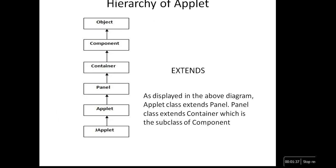Now let's see the hierarchy of an applet. The applet hierarchy contains JApplet, Applet, Panel, Container, and Component. Applet is a class which extends the Panel class. Panel extends Container. Container is a subclass of Component. So all these classes are available in applets. Please remember the hierarchy of applet, as we have seen the same thing in AWT components.